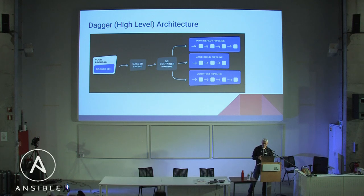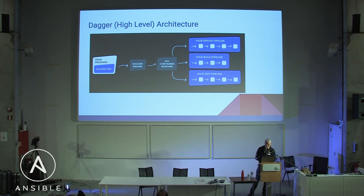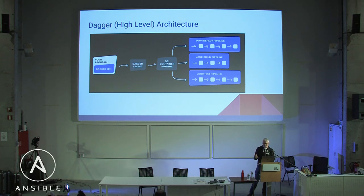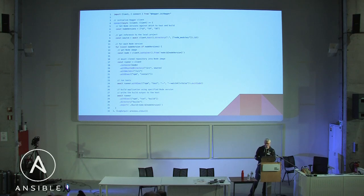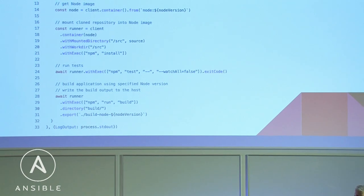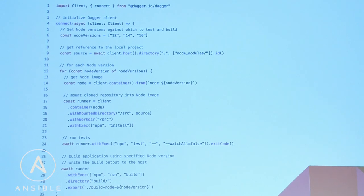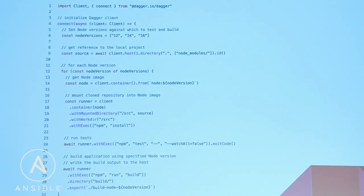The nice thing is that Dagger applies Docker or container primitives and checks: are my inputs on subsequent runs the same as on the very first run? If I'm feeding the same source files to be compiled a second time, the outcome will probably also be the same — so unless inputs have changed, Dagger says 'skip this step,' hereby also improving the round-trip time for testing and building your application. They already have a TypeScript SDK — here's a small example of how you can build a Node.js application with three different major Node.js versions.